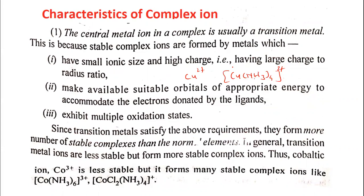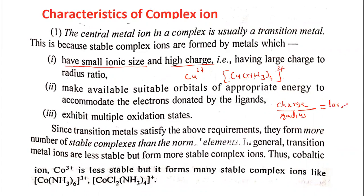So why do transition metal ions form complexes, and not other metal ions like sodium or potassium? Transition metal ions have small ionic sizes and they carry high charge. Their ionic sizes are less compared to other metal ions. This gives them a large charge-to-radius ratio (charge divided by radius), which is required for complex formation.